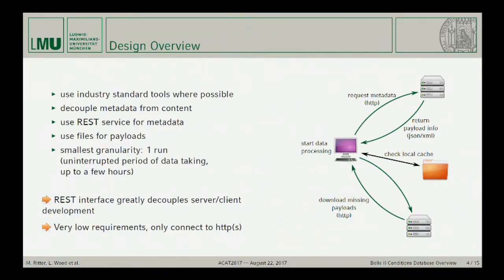The REST interface really helps with decoupling the server and client side because the interface is very simple and well-defined. Since we split the metadata and the payloads, we can also have intermediate steps. When we start data processing, we just request the metadata from the server and get payload info returned as JSON or XML, which tells us which files we need. Then we can check a local disk cache or go to any number of technologies locally to find the files, and if some payload files are missing, we can download them using HTTP. There are very low requirements on grid sites — the only thing needed is an HTTP connection, which has become very reliable over the past decades.